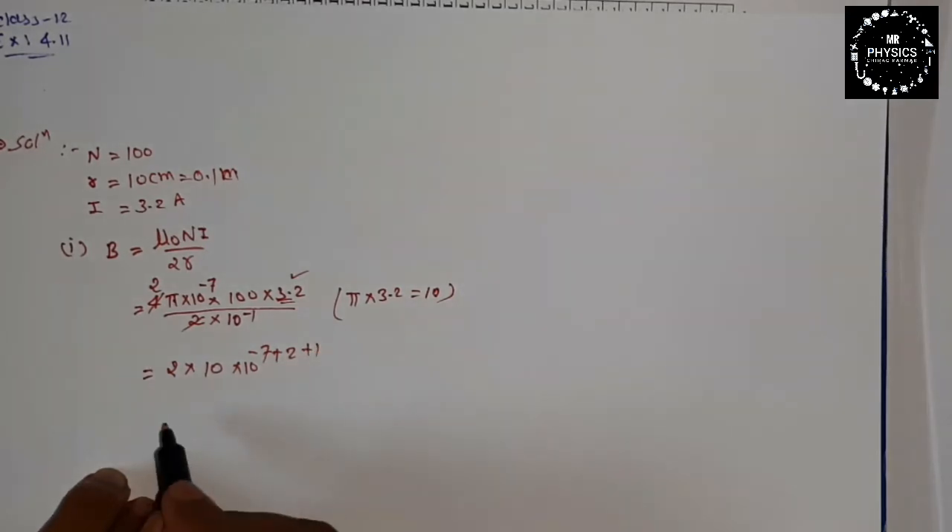Pi square normally what? 10 or 3.14. Multiplying these values: pi and 3.2 gives 10, and 10 raise to minus 7 plus 2, and minus 1 will give plus 1. So you have 2 into, this will be 4. 10 raise to minus 7, 2, 1, 3, plus 4 is 4.